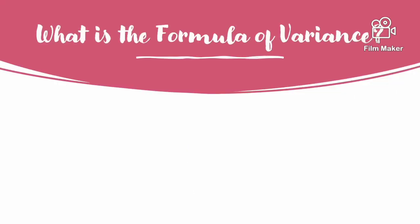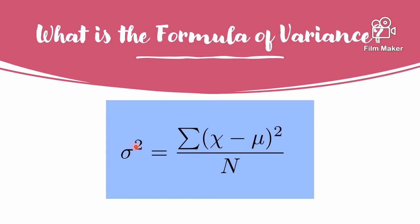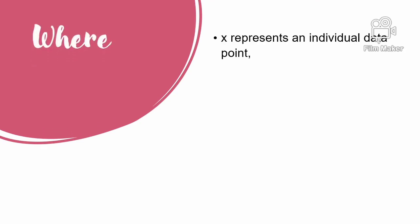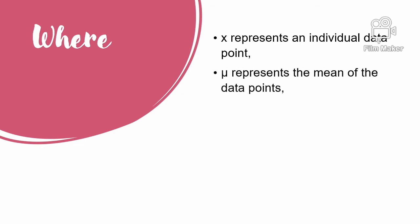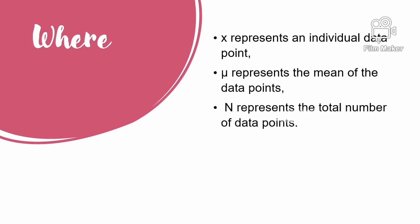The formula for variance is: σ² = Σ(x − μ)² / n. Where x represents an individual data point, μ represents the mean of the data points, n represents the total number of data points, and σ represents the solution.